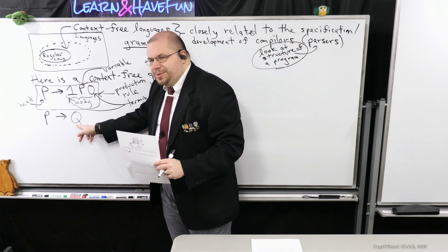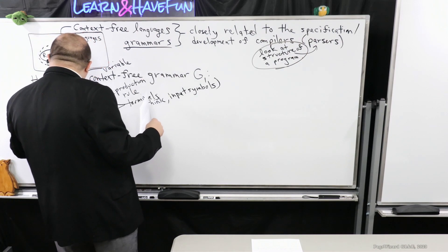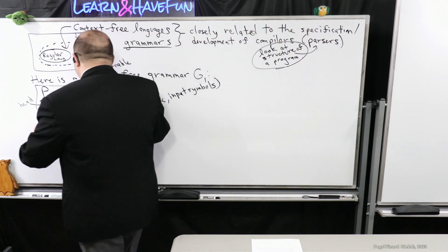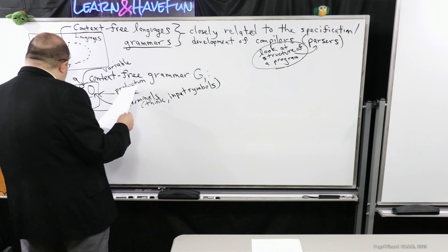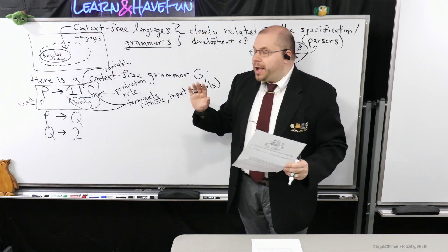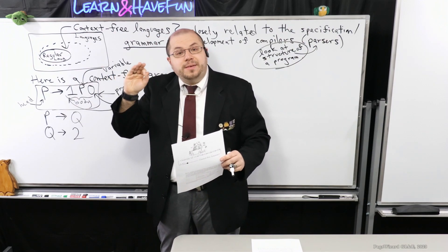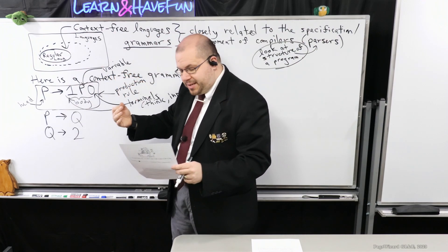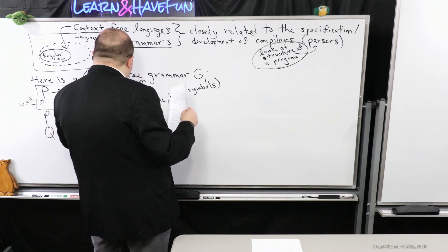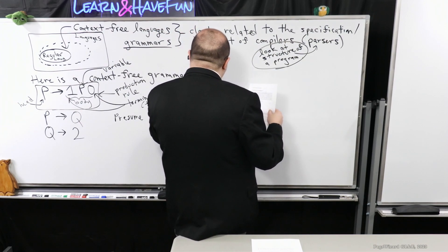Let's introduce another rule: Q produces 2, where 2 is a terminal. The idea is that I start off with some symbol called the start symbol. Let's presume P is the start symbol—that's what the initial string will look like. What happens is I'm going to apply these production rules to mutate P so that the goal at the end is that the string only consists of terminals. I apply production rules to replace variables with terminals eventually.